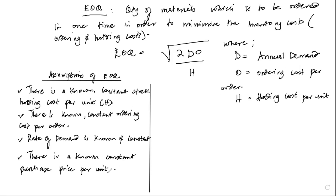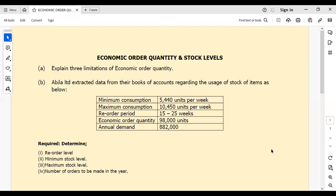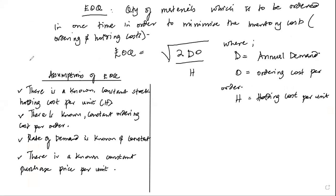The first part of the question requires us to explain three limitations of the EOQ model. The limitations come directly from the assumptions, because none of these assumptions is fully realistic. We simply need to criticize the assumptions one by one.